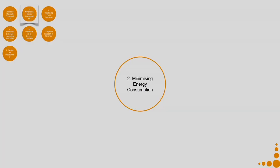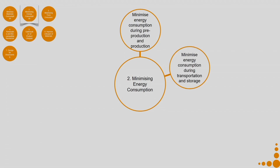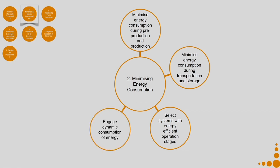Now, minimizing energy consumption. The sub-criteria are: minimize energy consumption during pre-production and production, minimize energy consumption during transportation and storage, select systems with energy-efficient operation stages, engage dynamic consumption of energy, and minimize energy consumption during product development.